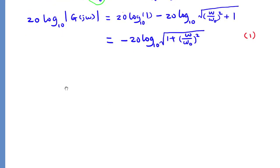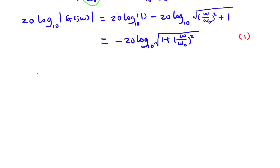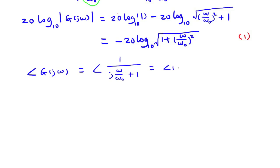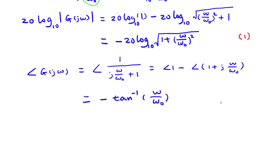The phase can also be found from the phase angle of the numerator minus the phase angle of the denominator, which equals 0 minus arctan(omega / omega_0). Let's call this equation number 2. These are the analytical solutions for magnitude and phase for the general real pole problem.